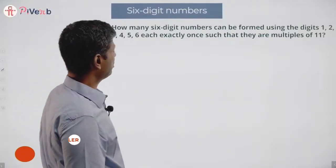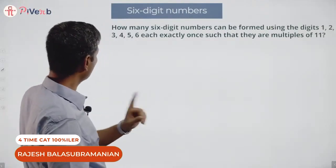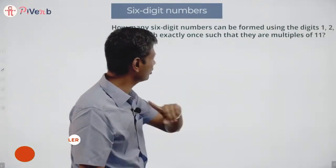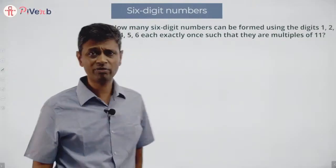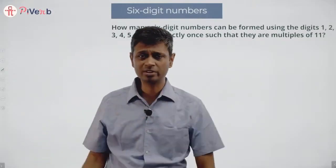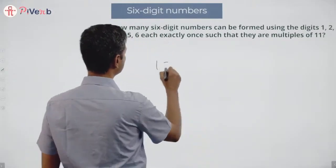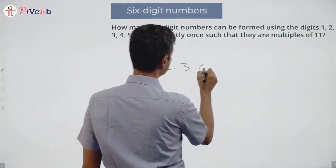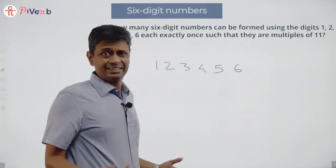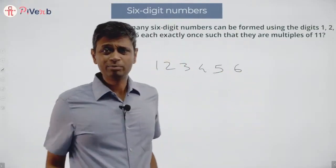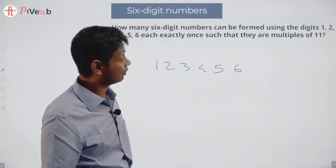How many six-digit numbers can be formed using the digits 1, 2, 3, 4, 5, 6 each exactly once, such that they are multiples of 11? All of these questions — I like starting with some number: 1, 2, 3, 4, 5, 6. Nice and simple. Let's start with this. Now I want this number to be a multiple of 11.